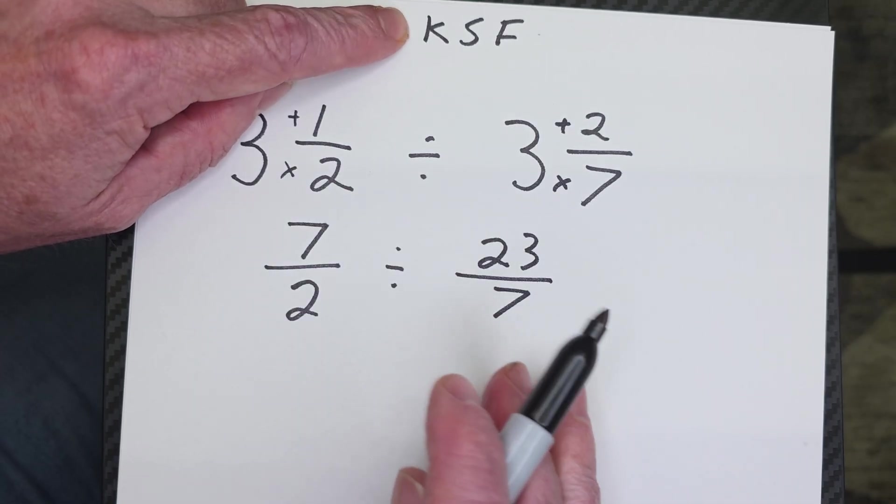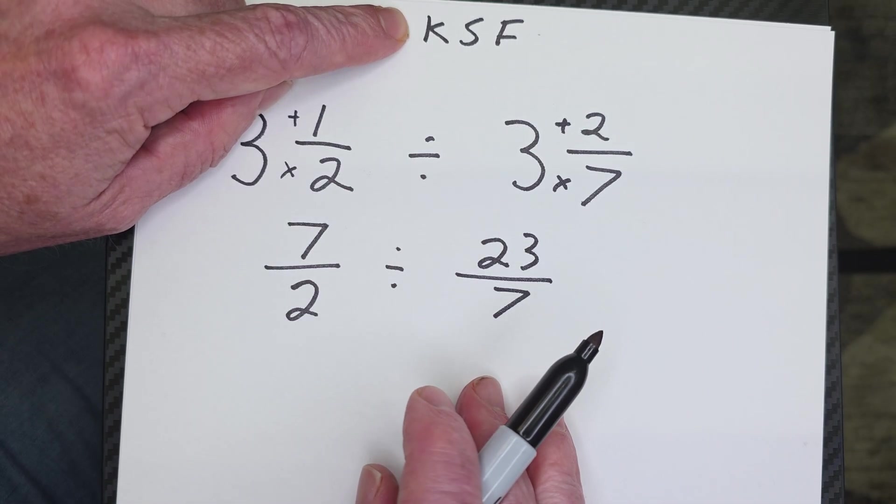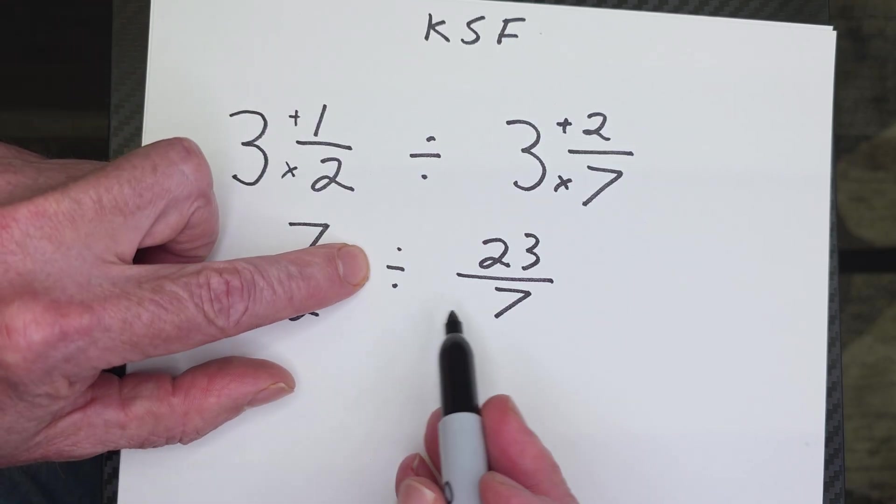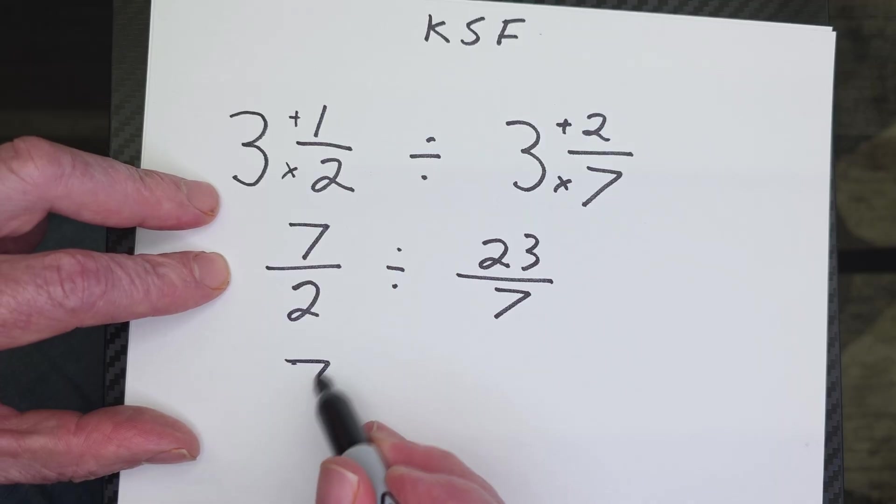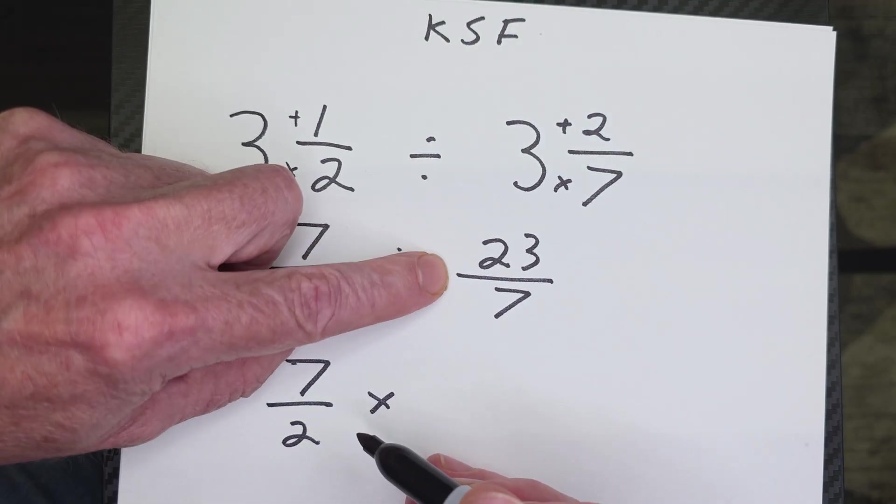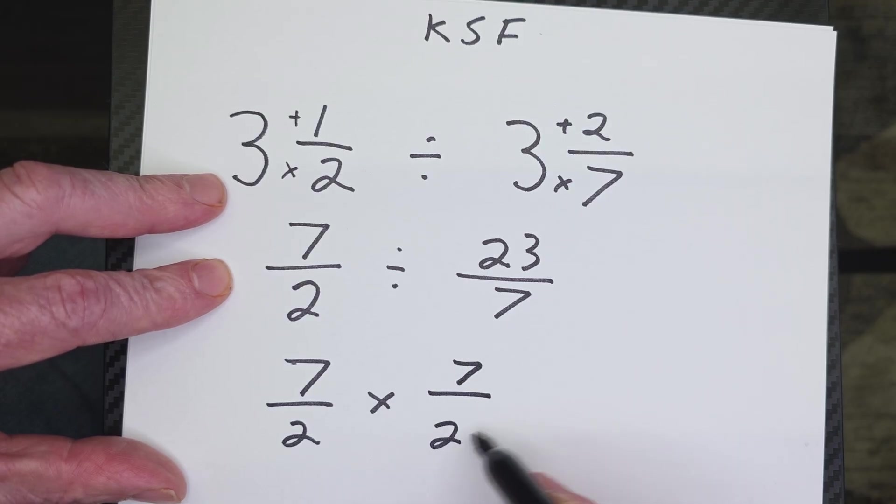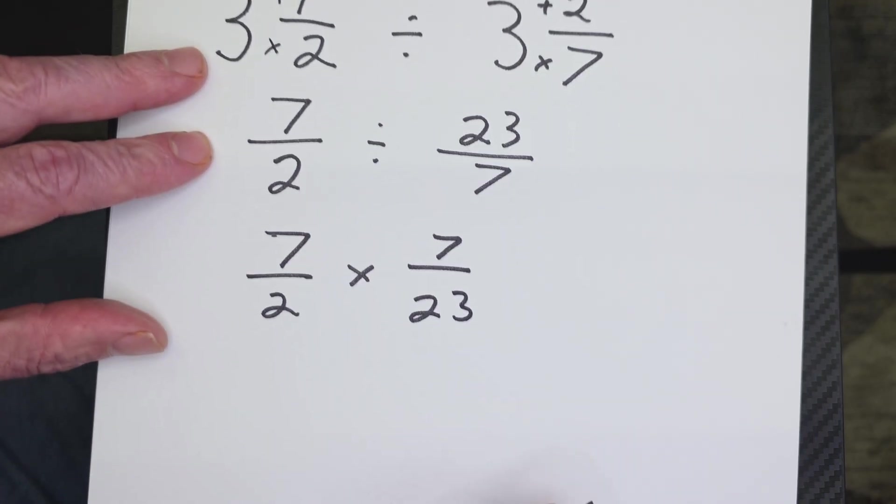It's the keep, switch, flip. So we keep this number. We switch this over to multiplication, and then we flip this number right here, 7 over 23.